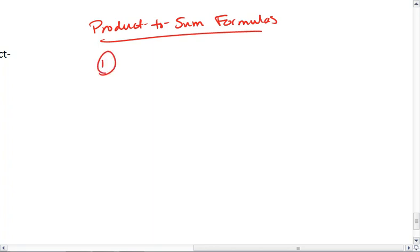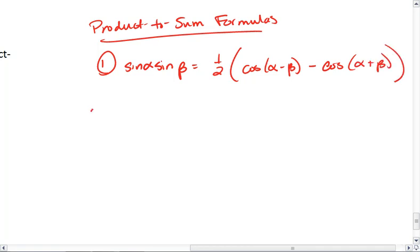What these tell me is that if I have sine of one angle multiplied by sine of another angle, that is the same as 1/2 times cosine of the first angle minus the second minus cosine of the first angle plus the second. Or maybe I have cosine of an angle times cosine of another angle. This is the same as 1/2 of cosine alpha minus beta plus cosine of alpha plus beta.